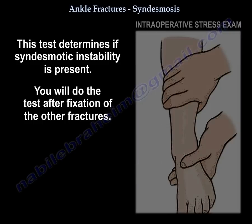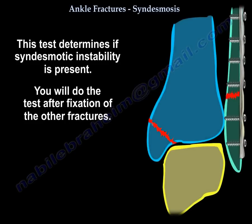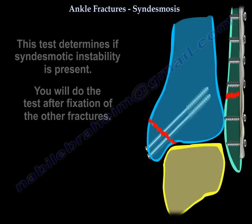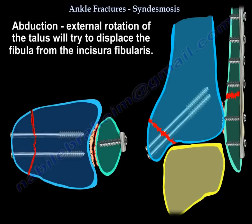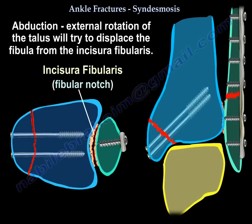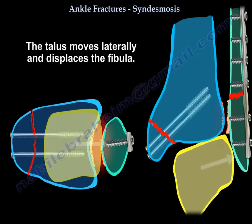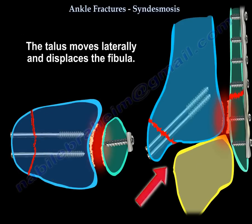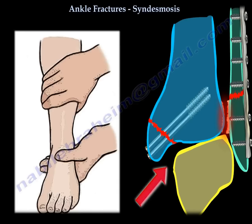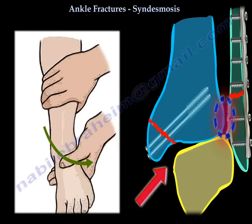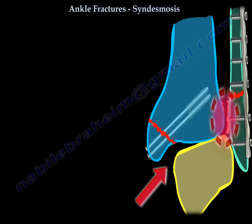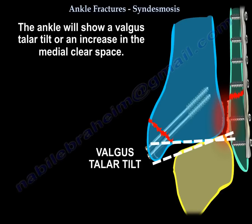You perform that test after fixation of the other fractures. The abduction external rotation of the talus will try to displace the fibula from the incisura. The talus will move laterally and displace the fibula. The ankle will show a valgus talar tilt or an increase in the medial clear space.